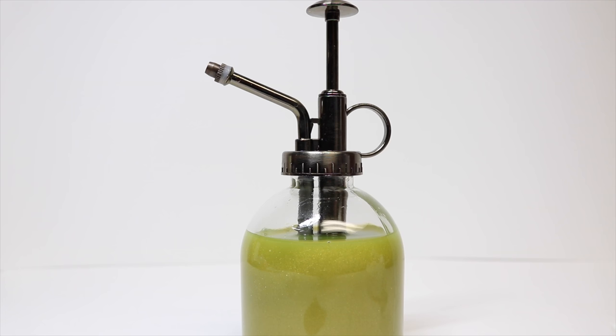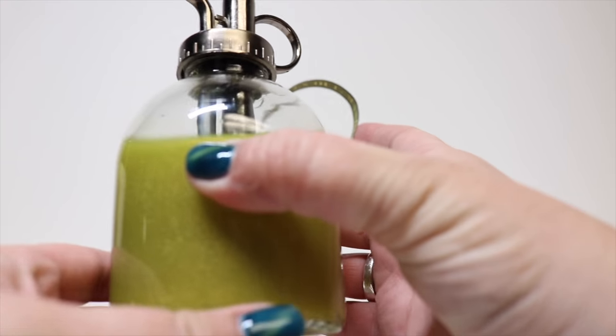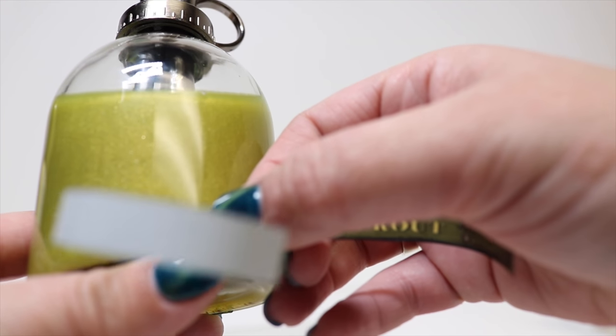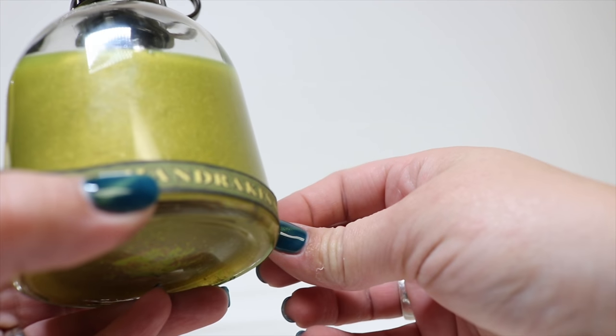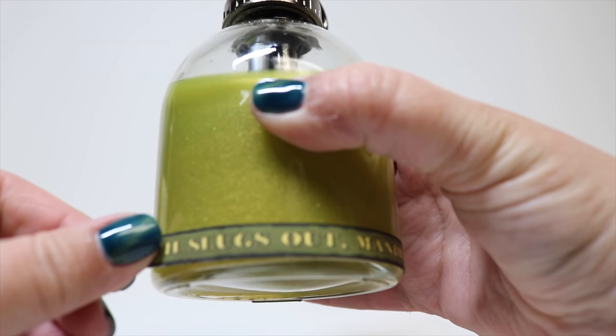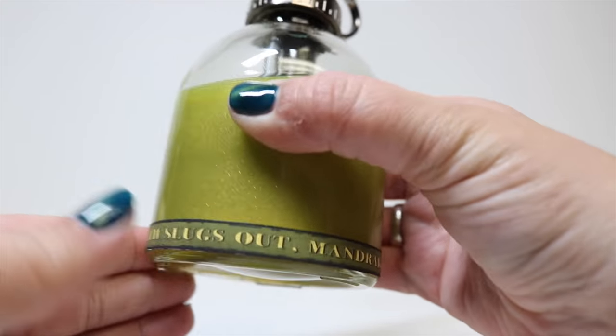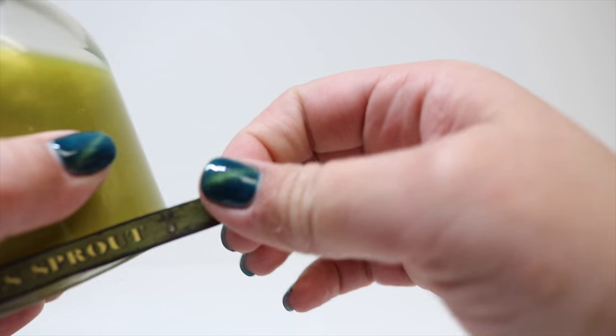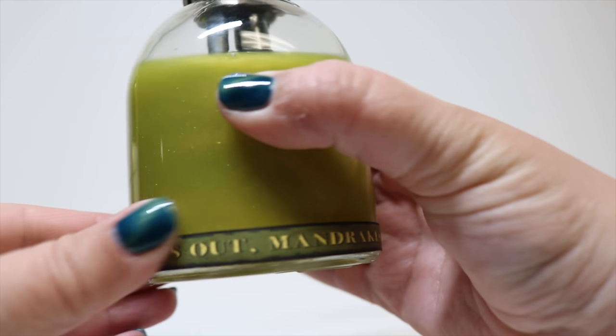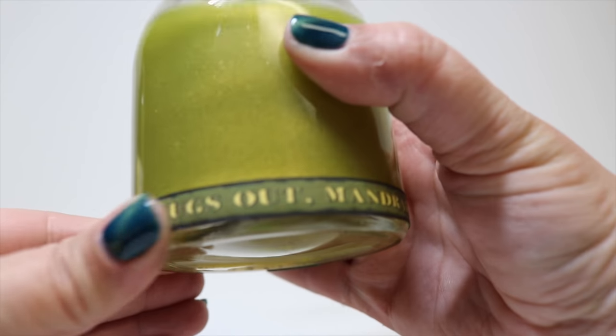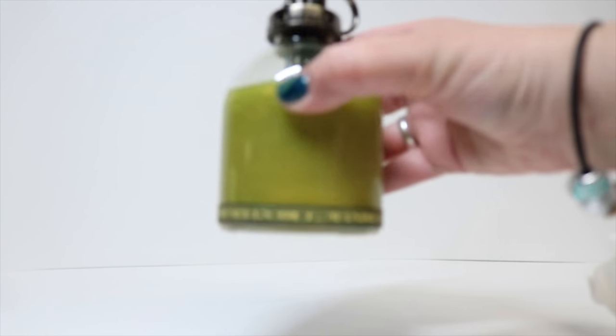The first one we're going to put on is the long strip that will go along the bottom because that'll kind of help with the spacing of the one that goes above it. We're just going to line this up on the bottom of the jar here. Once we feel like it's in a pretty good position we can go ahead and smooth it out. If need be you can kind of move it a little bit here in the beginning, but once it really gets stuck on they are not easy to get these stickers off, so make sure you get your positioning the way you want it.